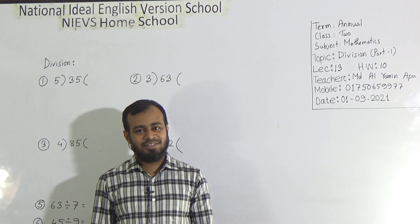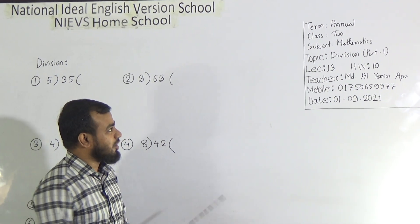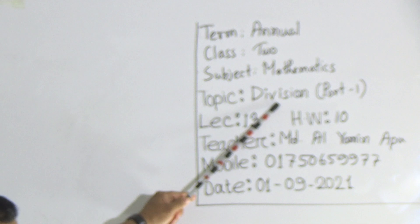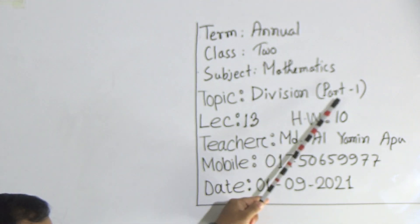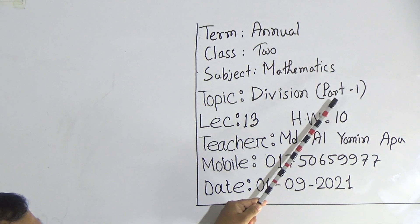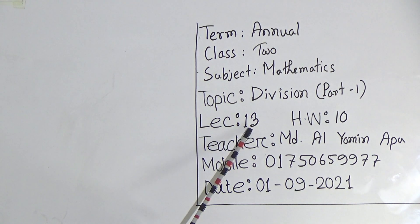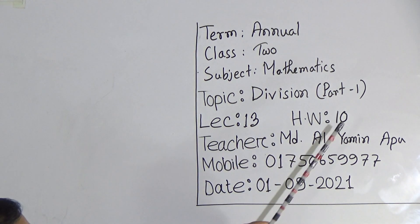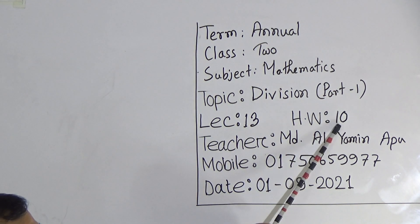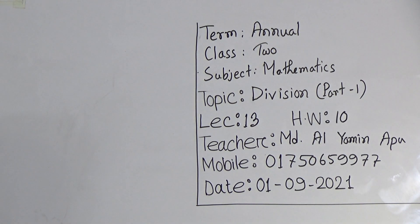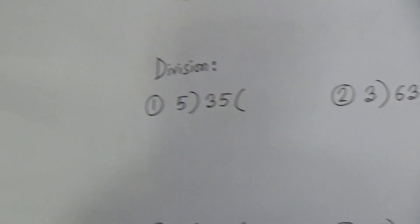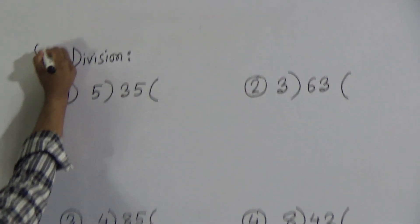So let's start our class. Today's topic is Division, Part One — that means this is the first class on the topic of division. This is lecture number 13 for the annual term examination. Your homework number is 10. Look at the board — your class work is Division.